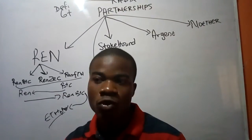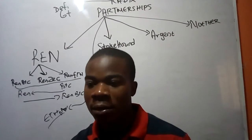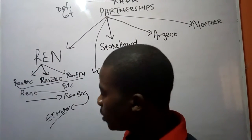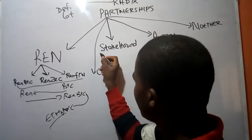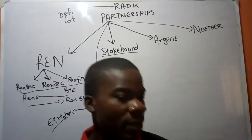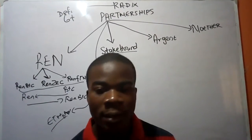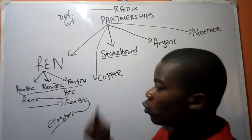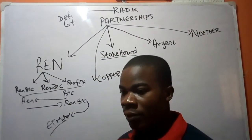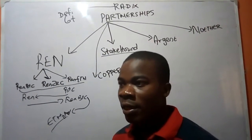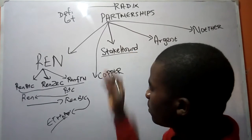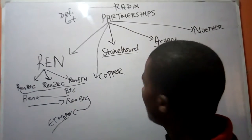If you are building decentralized applications, you will not be worried about where to get the liquidity from right from the start, and Rain makes that possible. The next partner is Stakehood. A lot of platforms, even apart from Rain, have partnered with Stakehood. What they are basically concerned about is providing liquidity for staking platforms.